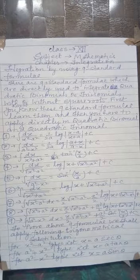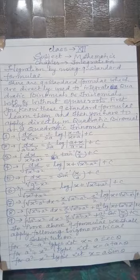Second formula: dx upon a square minus x square is equal to one upon two a times log (a plus x) over (a minus x), plus c. Third formula: dx upon a square plus x square (or x square plus a square) is one upon a times tan inverse of x upon a, plus c.